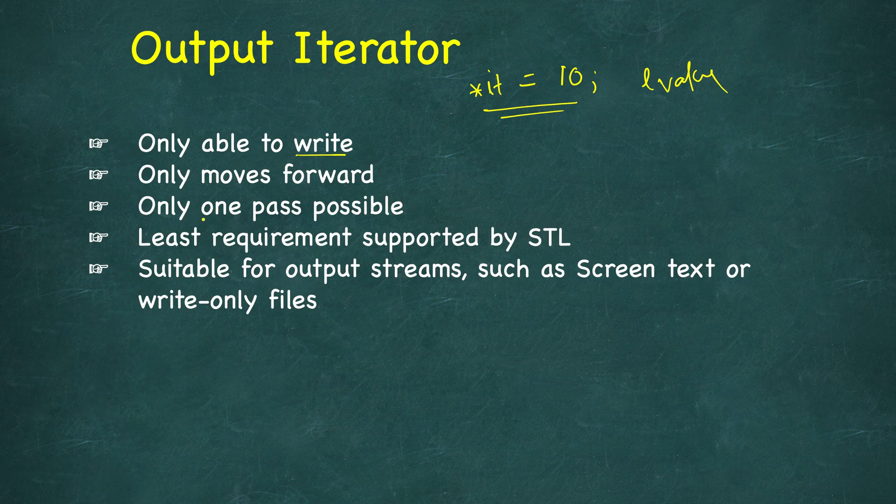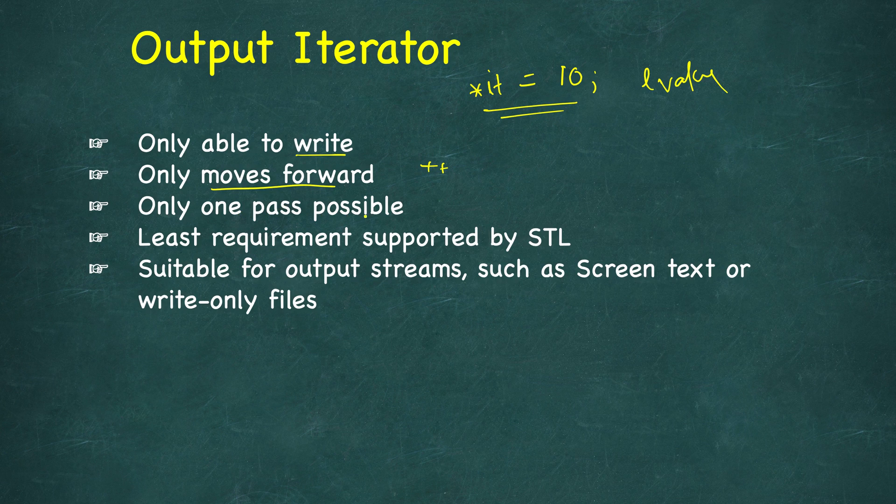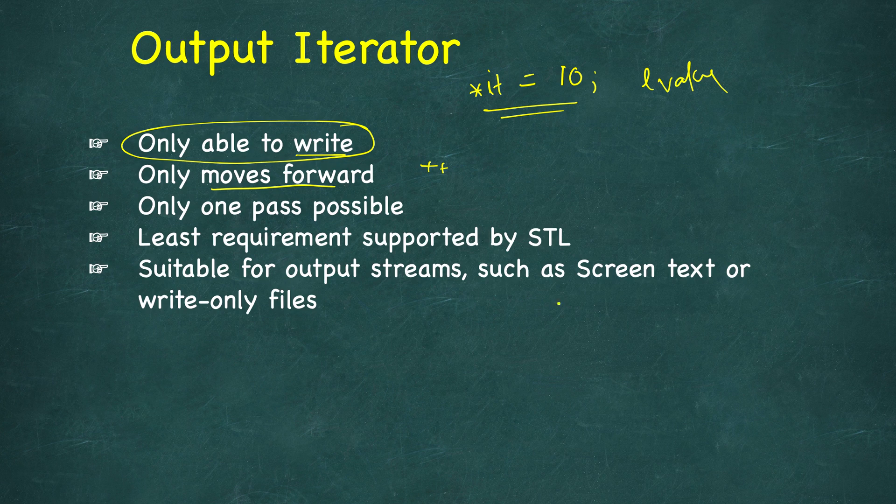Again, this is similar in that it only moves forward. You can do plus plus but not minus minus, and only one pass is possible. It has the least requirement similar to input iterator, but with the difference noted. These are suitable for output streams such as screen text or write-only files.